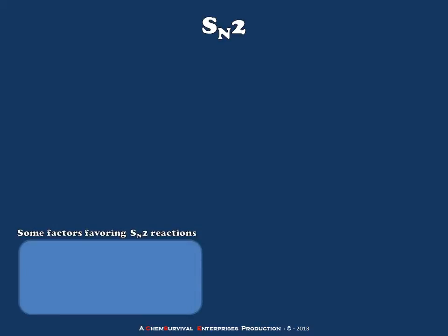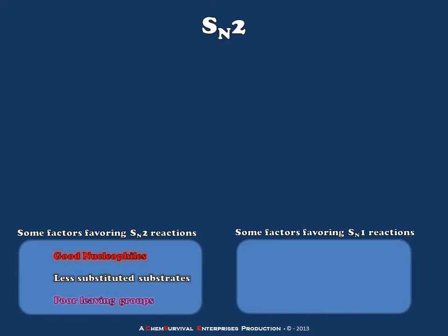So let's think about the SN2 reaction first. SN2 reactions are favored with good nucleophiles, less substituted substrates, and poor leaving groups. If any of this sounds unfamiliar, I suggest you watch the SN1-SN2 video on my YouTube channel at ChemSurvival. Some factors which favor SN1 reactions are exactly the opposite: poor nucleophiles, more substituted substrates, and good leaving groups.